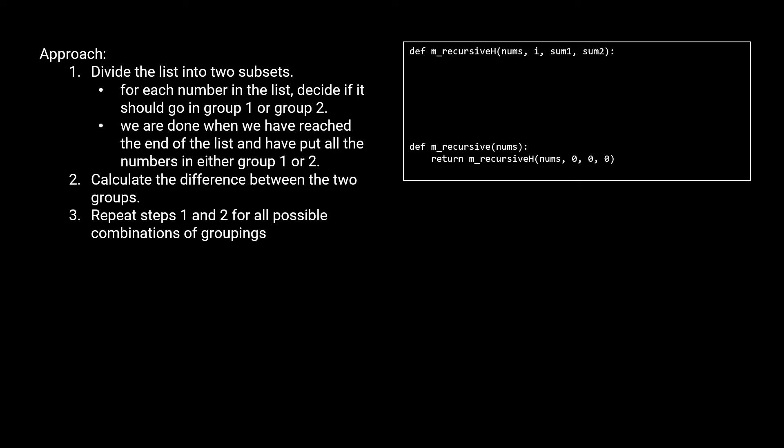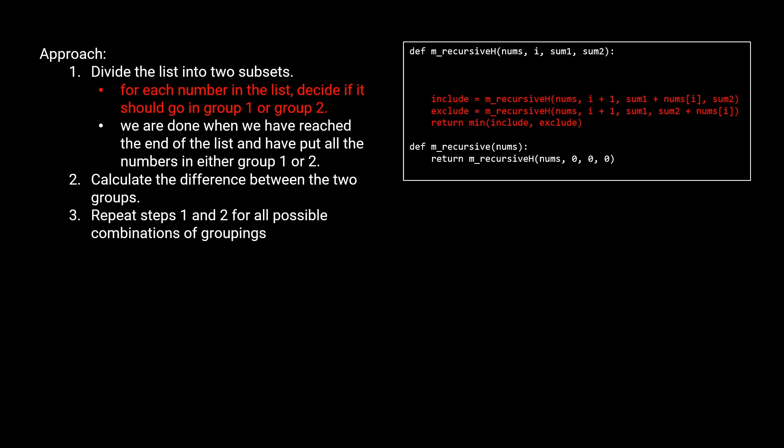The helper function is called m_recursive_h, and m_recursive is the function called from main directly. Let's inspect what the parameters mean. Nums is just our nums list. i represents the index of the number we're currently deciding whether to put in group one or group two. As the recursion progresses we expect i to get larger because once we decide on a number we move i to the next index. In our original call we start i at zero because we haven't picked any number yet. Sum one and two represent the sums of the chosen numbers in each group so far — initially both start at zero.